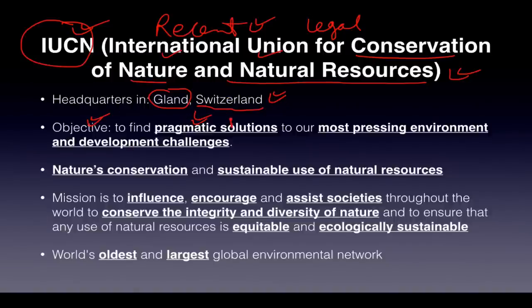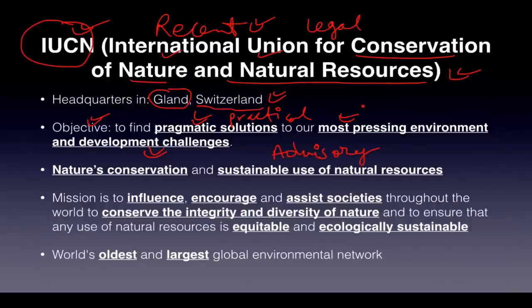The objective of IUCN is to find pragmatic, that is practical, solutions to our most pressing environmental and developmental challenges. For example, if carbon dioxide emissions are rising or some species is going extinct, IUCN will try to address that. Importantly, in most environmental conventions IUCN plays an advisory role — IUCN is much more than just the Red Data Book.